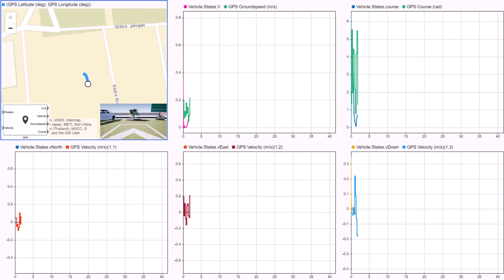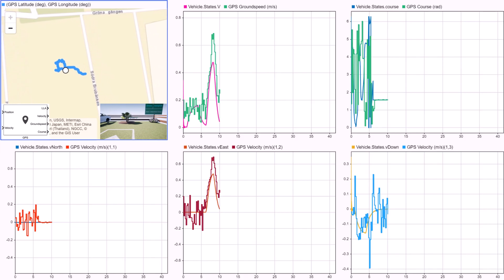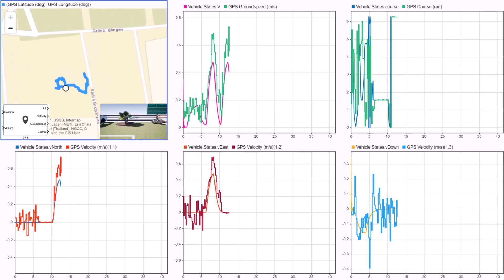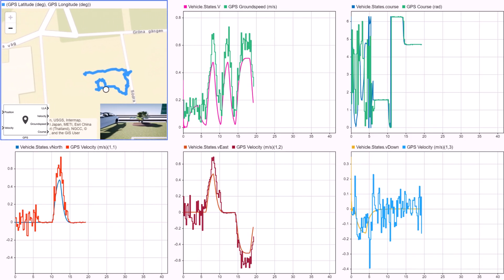Let's take a look at the simulation results. Using the simulation data inspector in Simulink, we can easily visualize the GPS model's outputs, including position, velocity and course, compared to the ground truth from the flight dynamics model outputs.